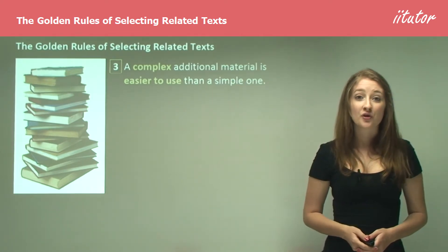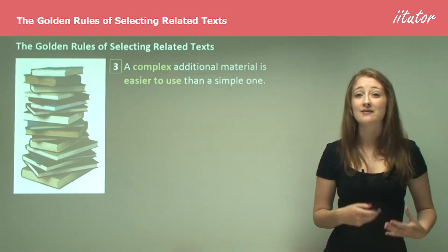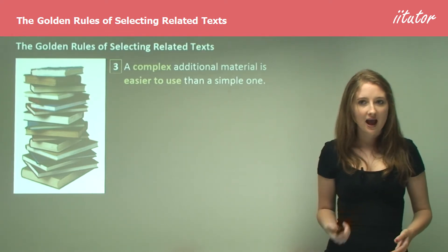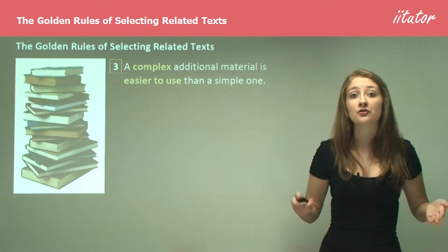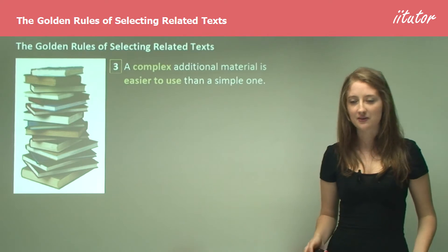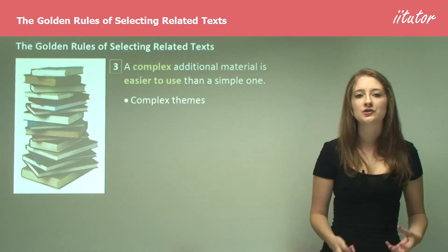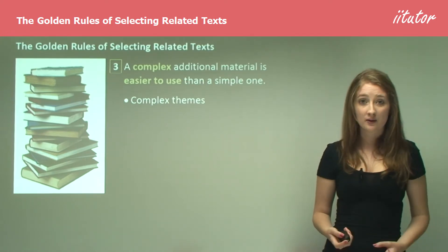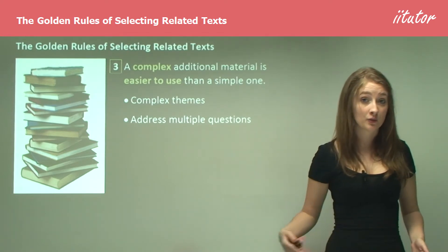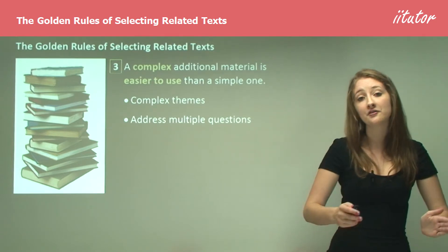The third rule is that complex additional material is easier to use than a simpler one. While you might think that something really easy and basic is going to make your life much easier because there's so little to analyze, at the end of the day you're really just shooting yourself in the foot because you're not going to have enough material to work with. You want to be looking at texts that have complex themes which you can really grasp and evaluate, and texts which have the ability to address multiple questions — bridging different themes rather than just one sub-theme of your area of study.